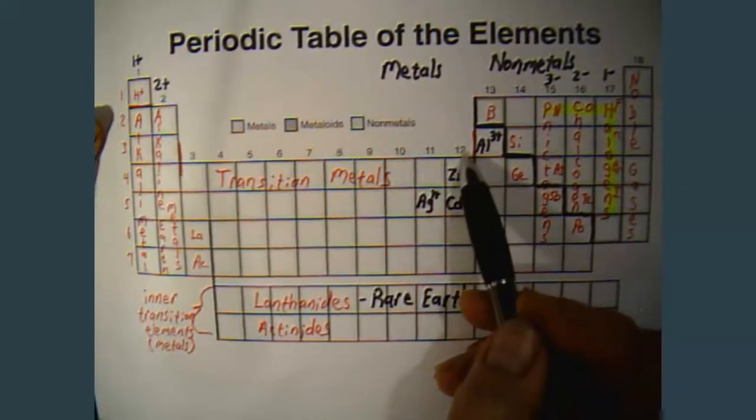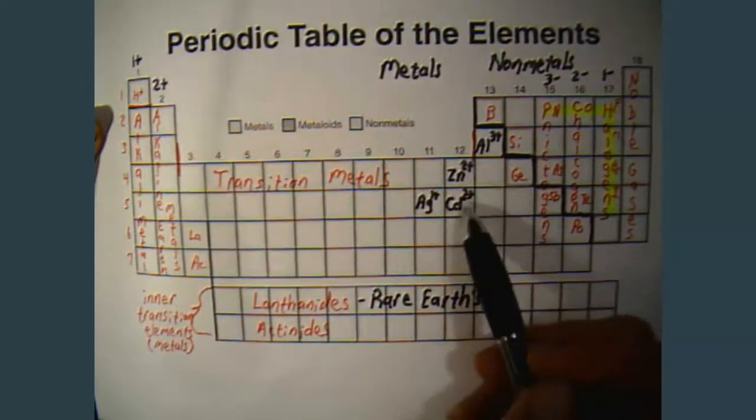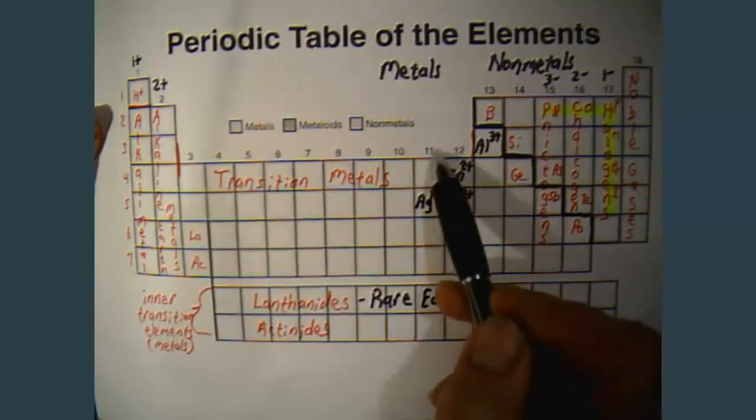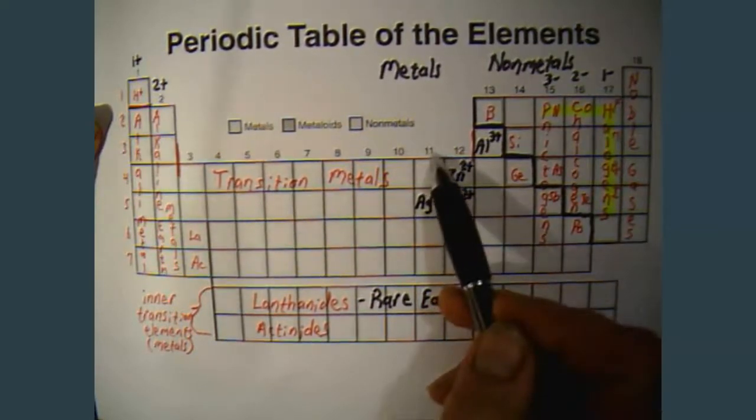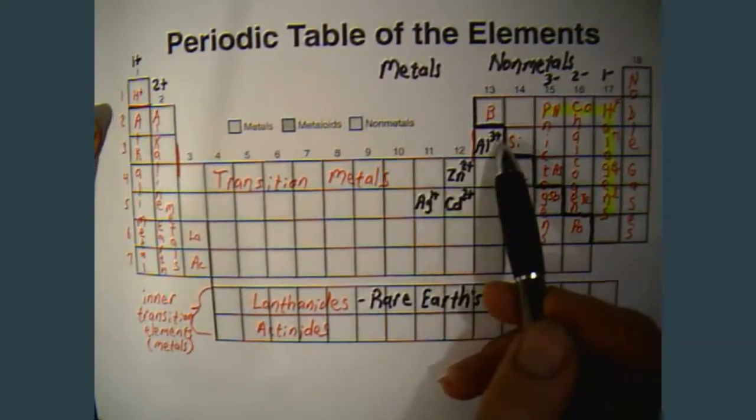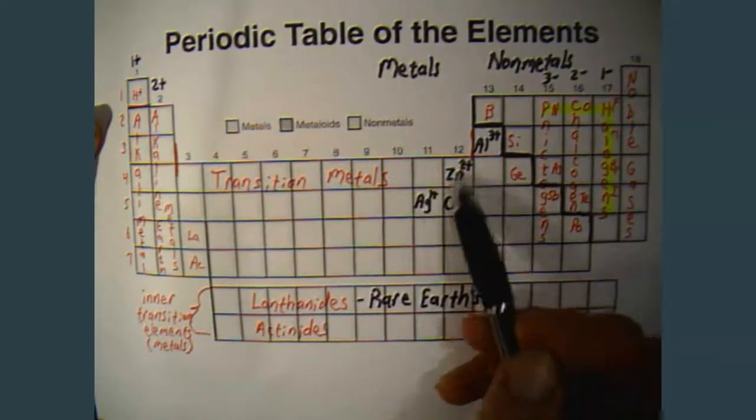Zinc is under group 12. 2 positive. Cadmium also 2 positive. Silver under group 11. The second number in 11 is a 1. Plus they count down: 3, 2, 1.